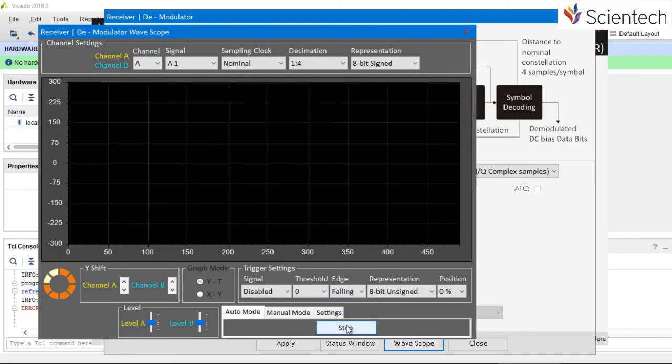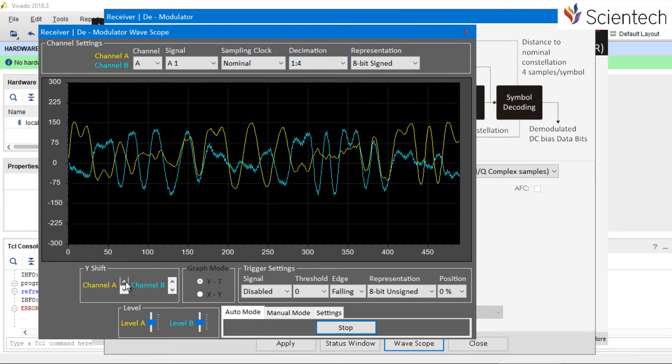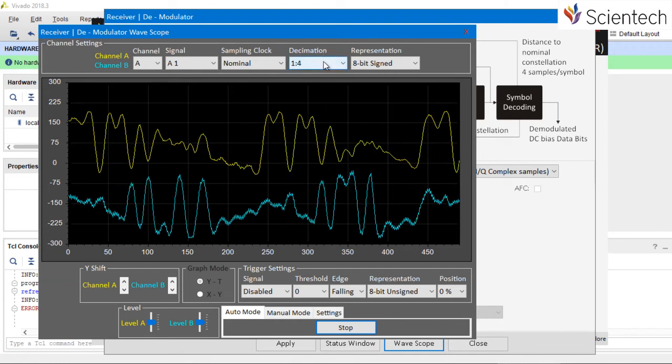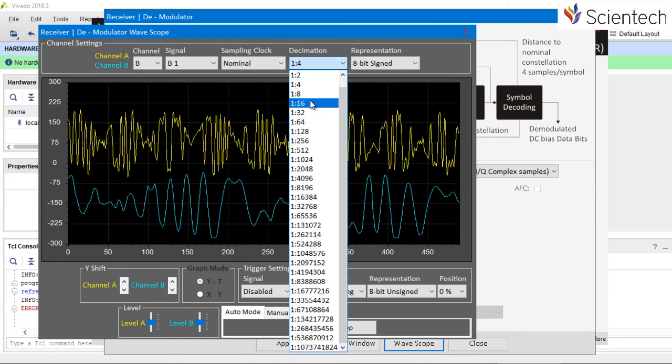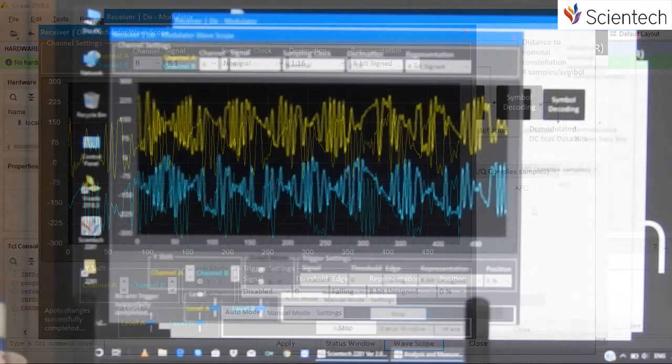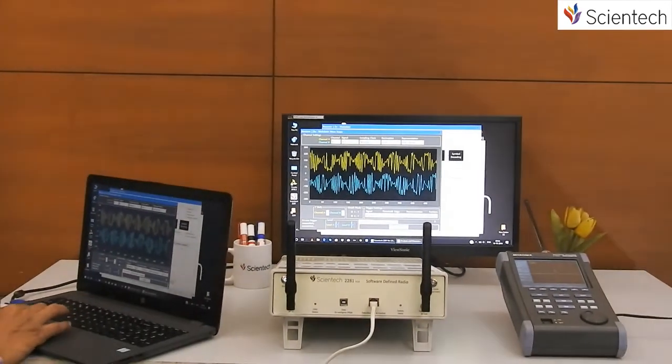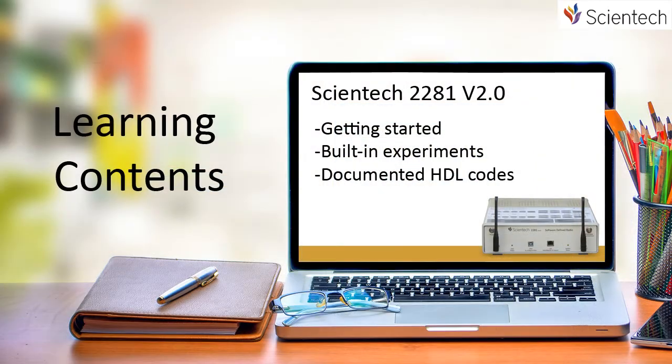At the receiver side, users can see the complex IQ signal. The Scientech 2281 version 2.0 also comes along with exhaustive learning material.